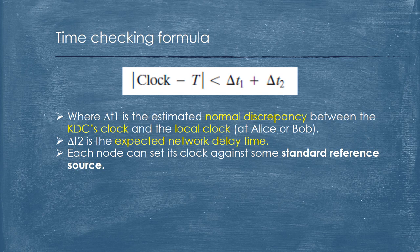T1 is the estimated normal discrepancy between the KDC's clock and the local clock at Alice or Bob. T2 is the expected network delay time. Each node can set its clock against some standard reference source.